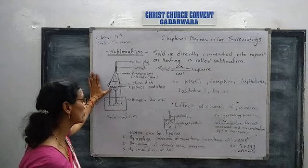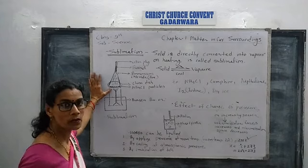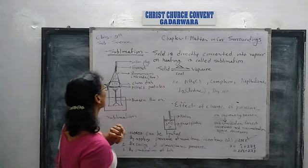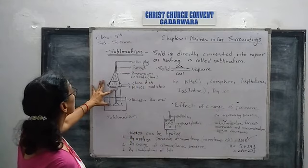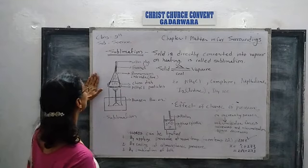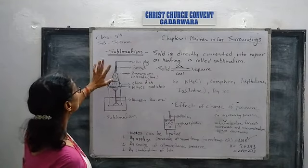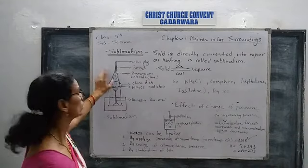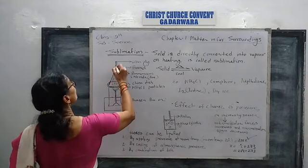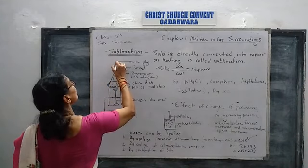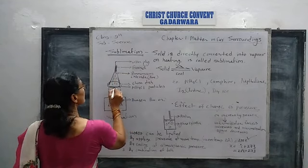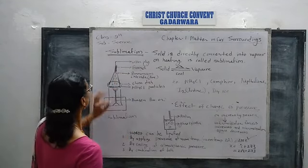We give heat to the China dish by the Bunsen burner, which is also used in the laboratory. When we heat the ammonium chloride particles, they change into gaseous state. The funnel's mouth is over the China disc where it is heated, and the stem of the funnel is cold.